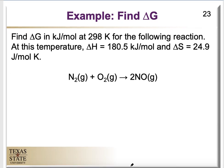In this problem, we find delta G in kilojoules per mole at 288 Kelvin for a given reaction where delta H is 180.5 kilojoules per mole and delta S is 24.9 joules per mole Kelvin. We already know the equation ΔG = ΔH − TΔS. Before plugging in, we need to check that the temperature is in Kelvin — which it is — and that delta H and delta S are in the same units.